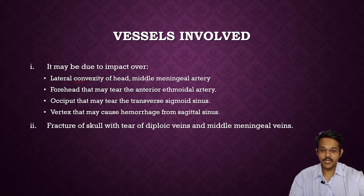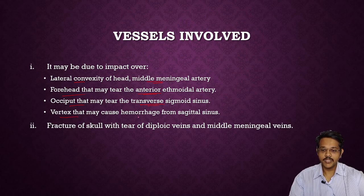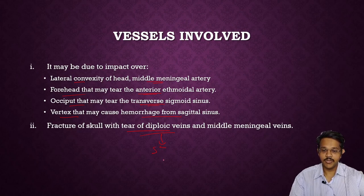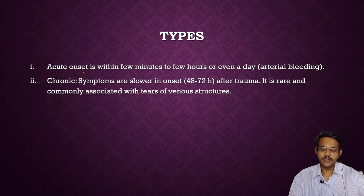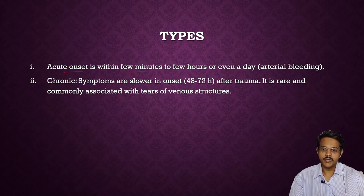Vessels involved mainly depend on the site of injury. In lateral convexity, there is middle meningeal artery injury. Bleeding in the forehead may be due to anterior ethmoidal artery hemorrhage; occipital region bleeding may be due to transverse or sigmoid sinuses; vertex bleeding may be due to sagittal sinuses. Fracture of the skull with tear of diploic veins — which connect the scalp and skull to the inner veins — can also cause extradural hemorrhage. Arterial hemorrhage is most common in extradural hemorrhage.